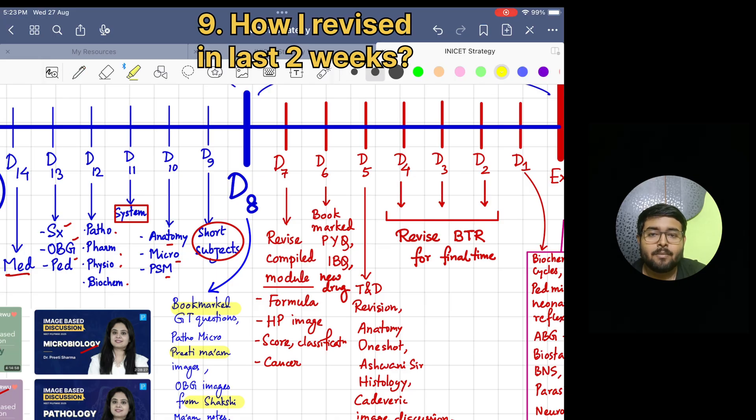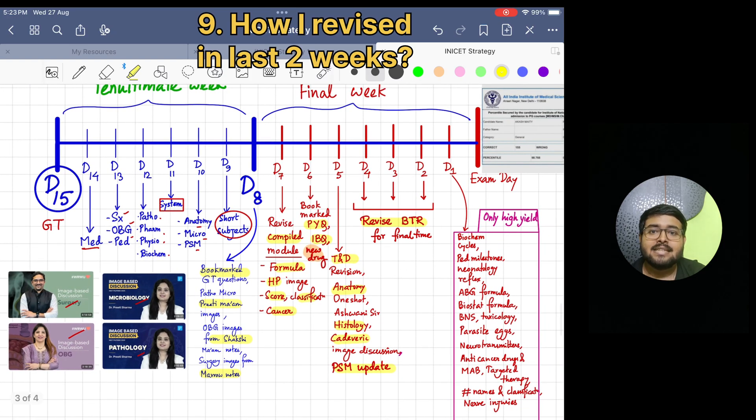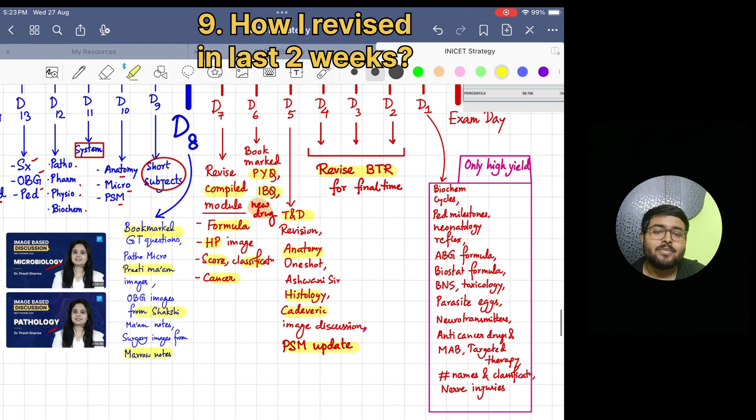On Day 7, I revised compiled modules like Formula Class, Histopathology Images, Scores, Classification, and Cancer Module. On Day 6, I revised bookmarked PYQ, image-based questions, and new drugs. On Day 5, I revised all BTR TNDs whose photos I had taken before. I watched Anatomy One-Shot Revision, Histology Cadaveric Image Discussion video by Ashwani sir available on YouTube. I also did PSM updates. Next three days, I revised BTR entirely as I had annotated all the important points from various resources in BTR only.